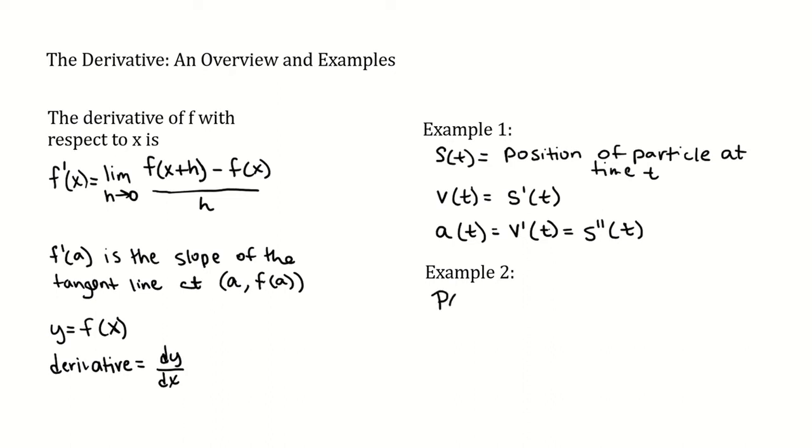Second example: let's say that P(x) is the profit generated by selling x widgets. Then P prime of x would be equal to the marginal profit.